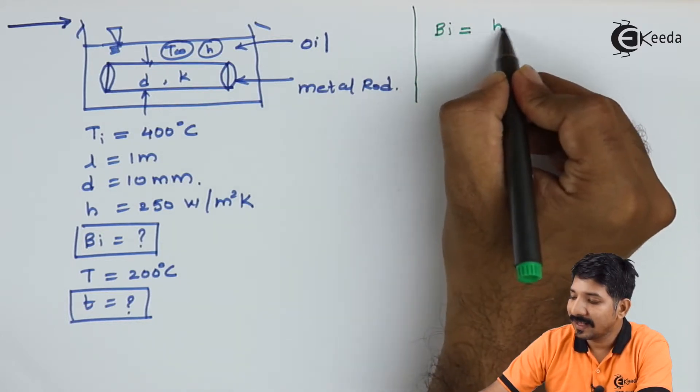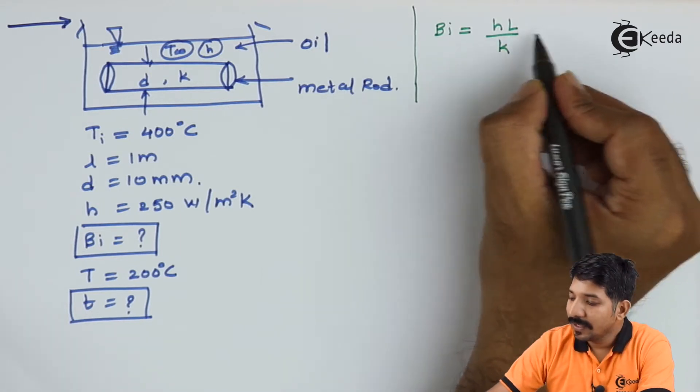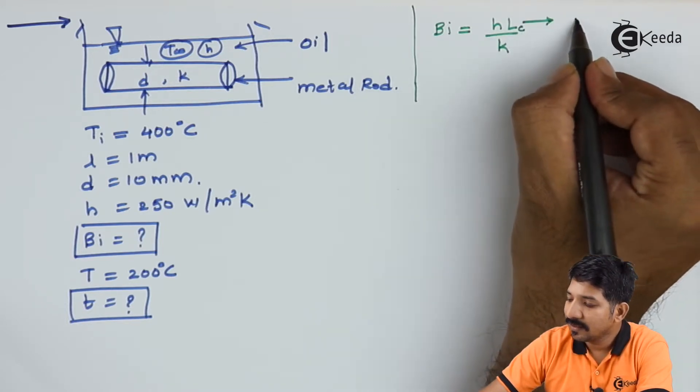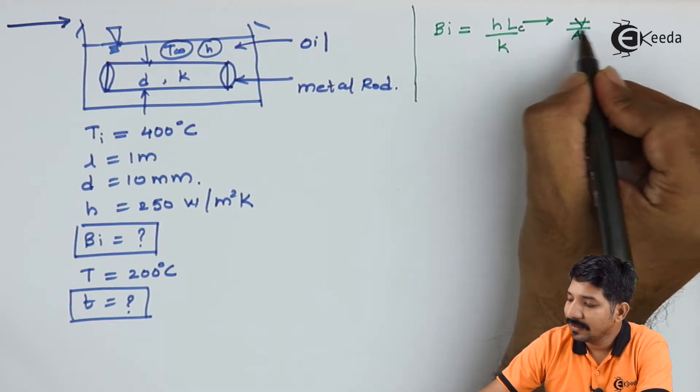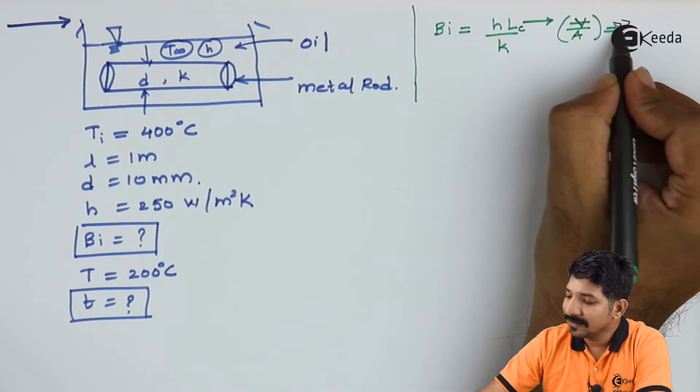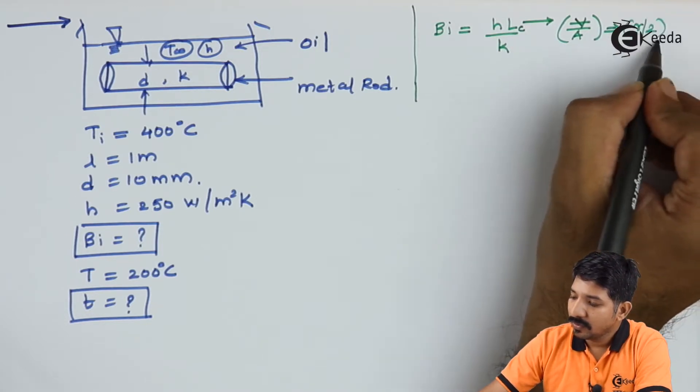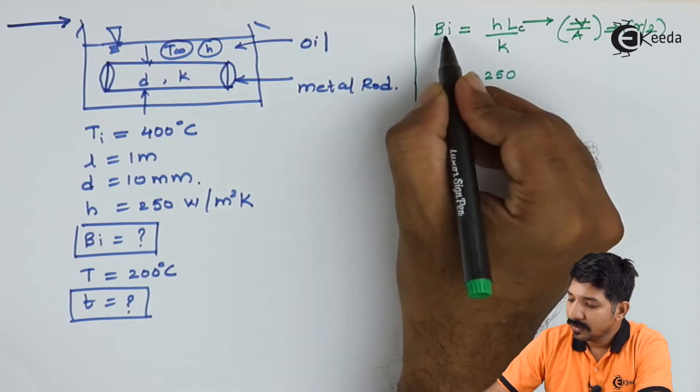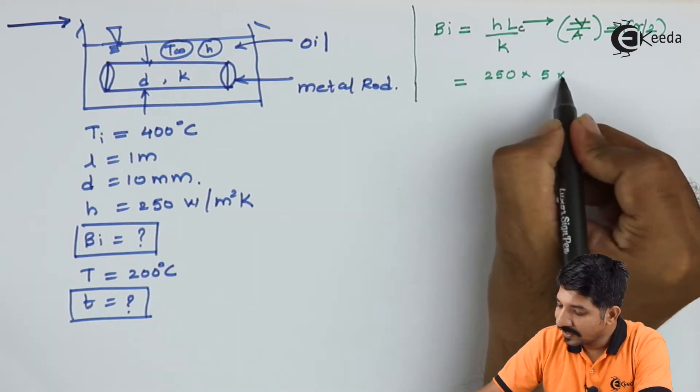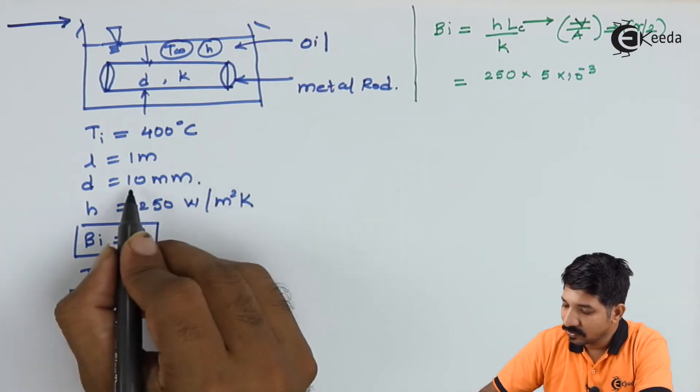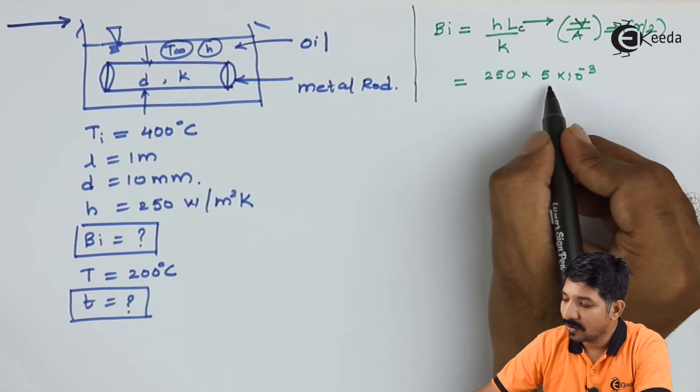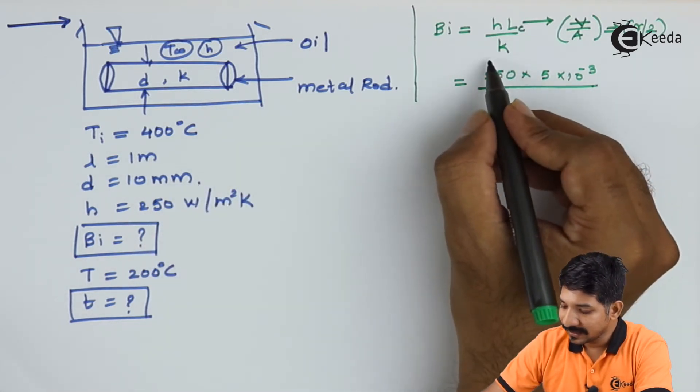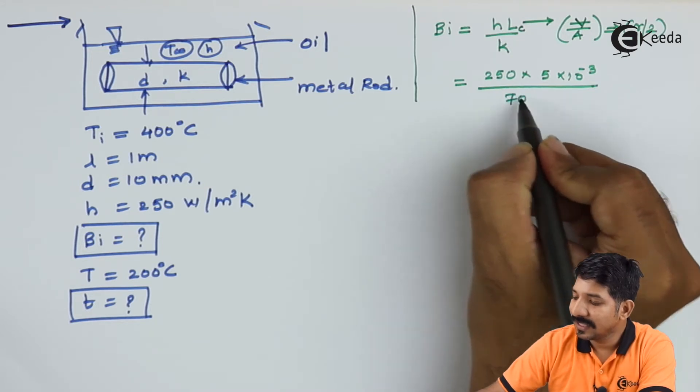Let us start attempting the problem. The first thing is finding the Biot number. We know Biot number can be given as HL upon K. In this case, the value of LC which is given as the volume upon area, the LC we are getting is R by 2. If I substitute the numbers, we are having Biot number as HL upon K which is 250 into 5 multiplied by 10 raised to minus 3. We are given the diameter as 10 mm, so the radius will become 5, and we have converted mm into meter.